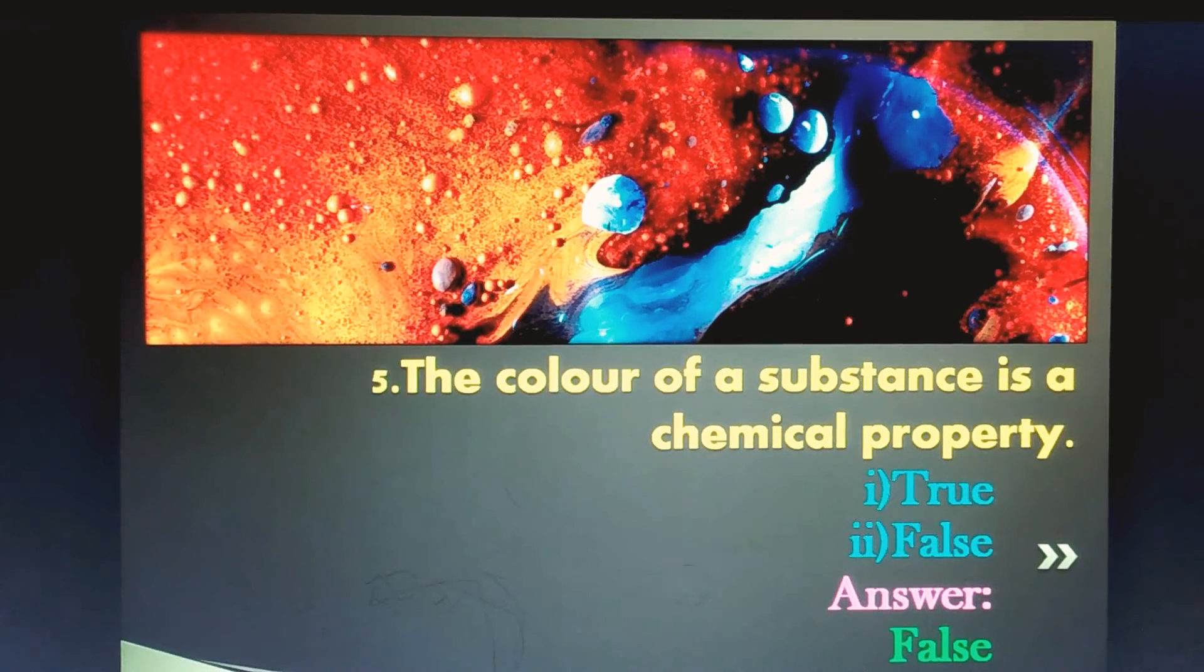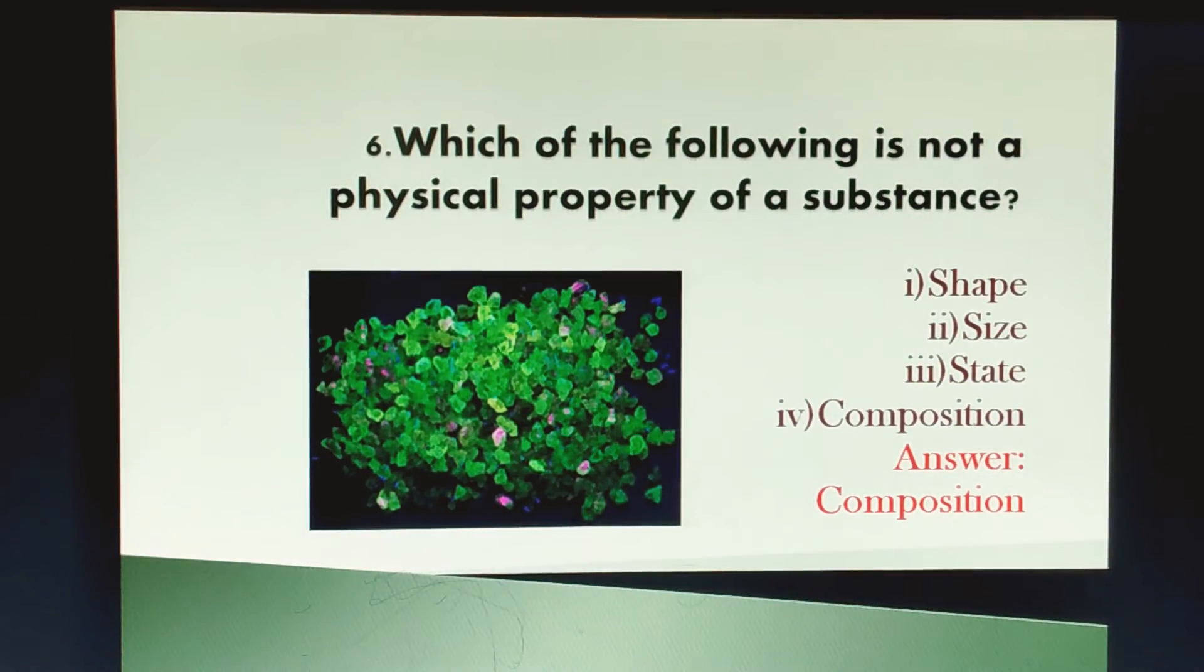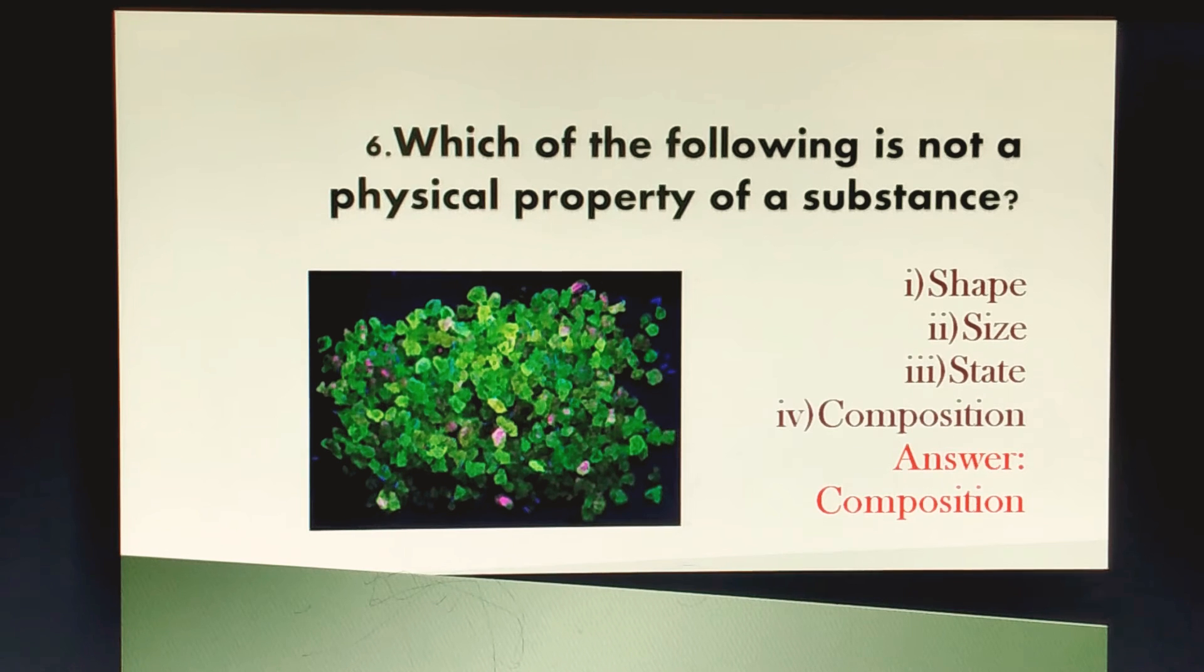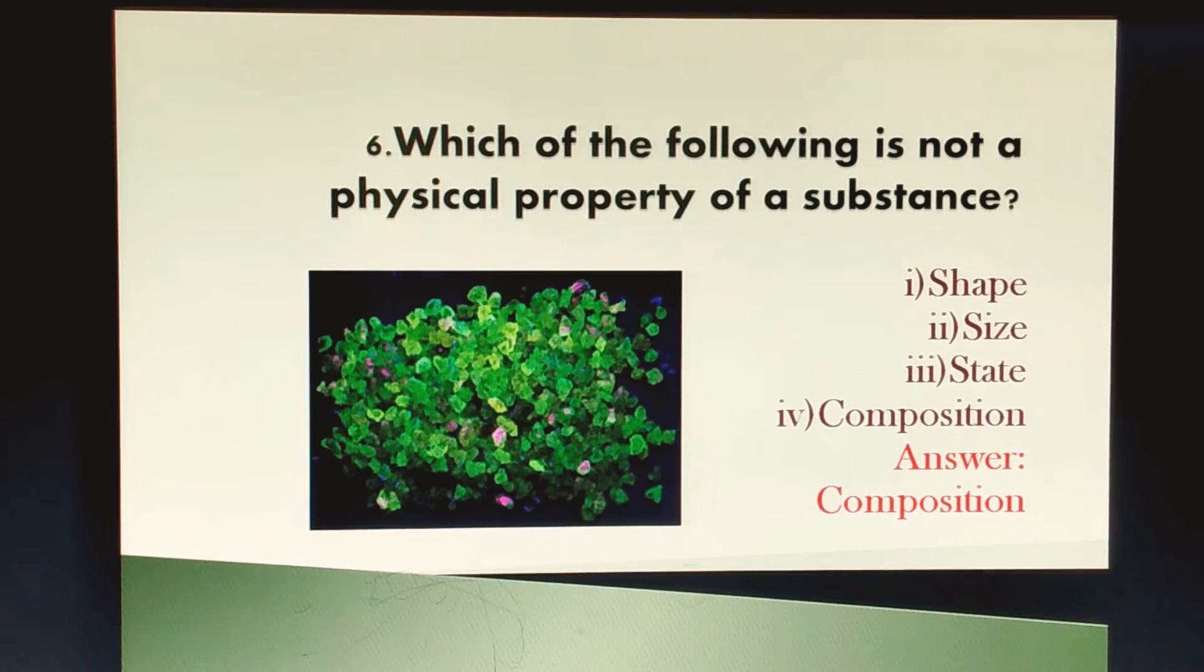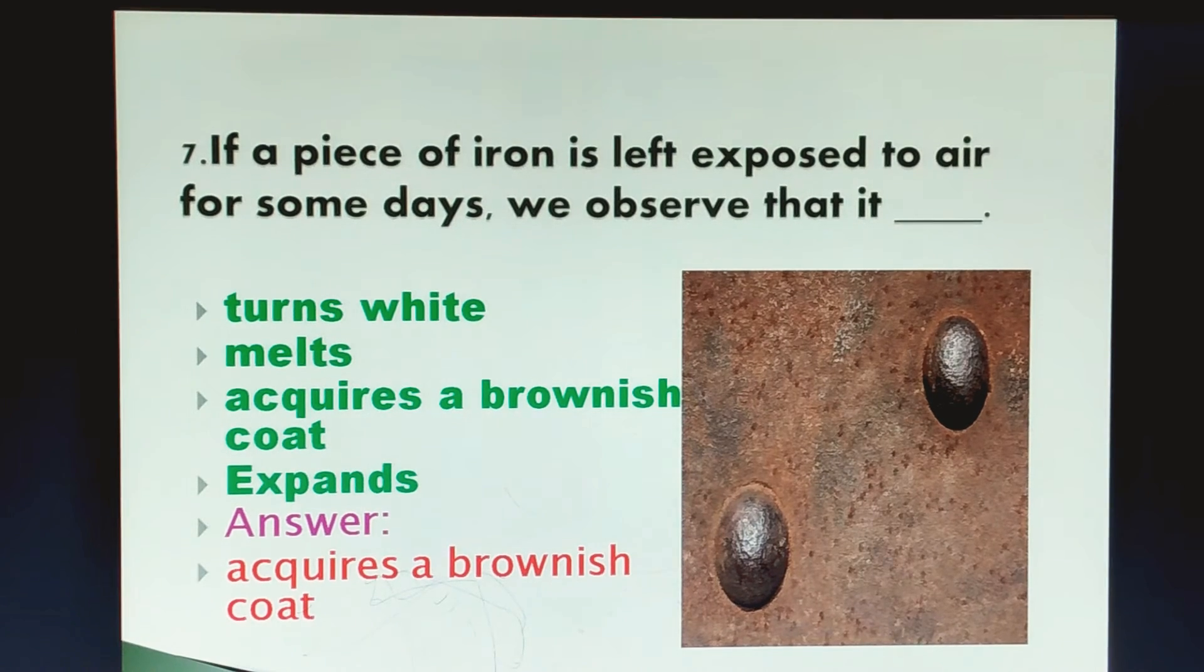The color of a substance is a chemical change, is it true or false? Of course it is false. Color is a physical property. Which of the following is not a physical property of a substance? Shape, size, state, and composition. The correct answer is composition.